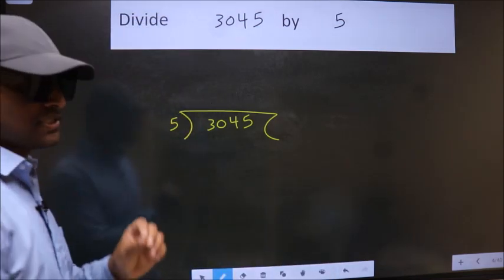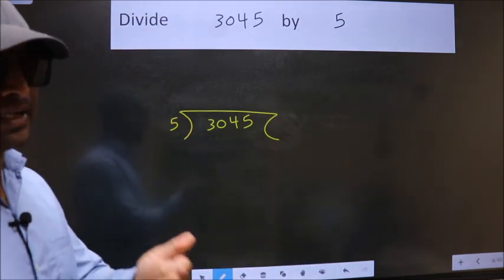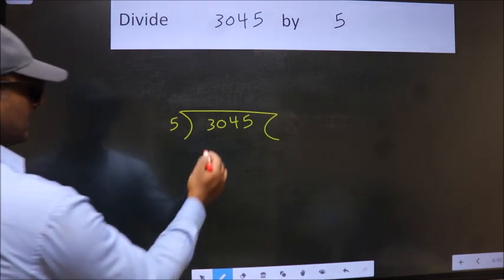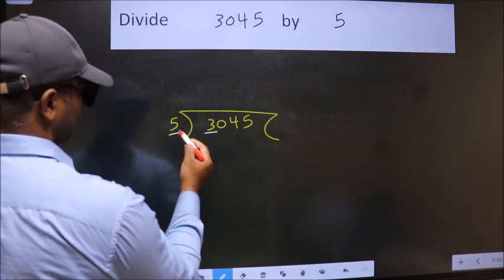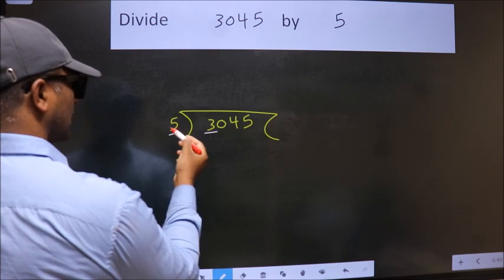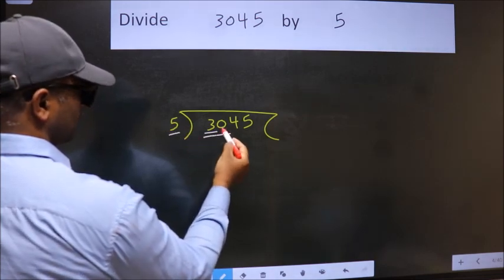This is your step 1. Next, here we have 3. Here 5. 3 is smaller than 5. So we should take two numbers, 30.